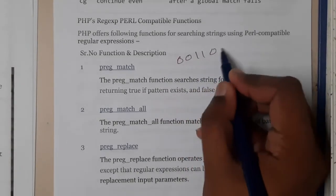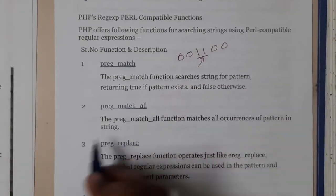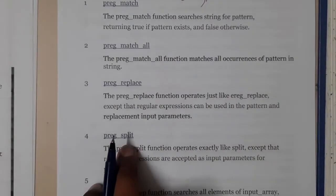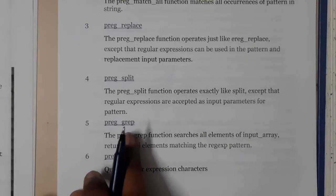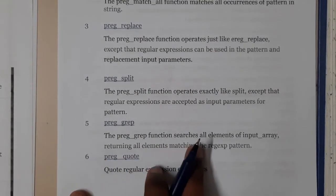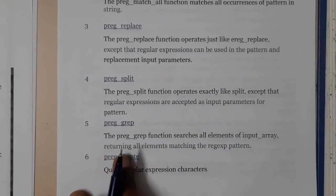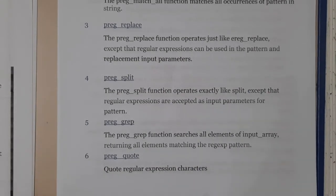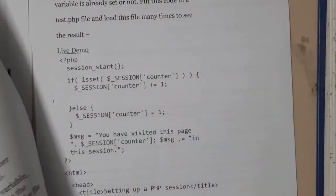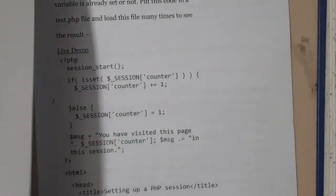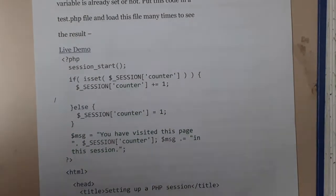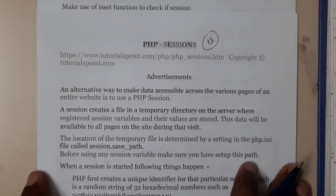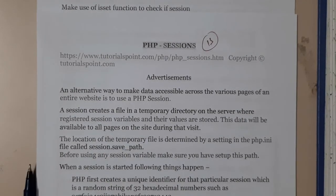For example, searching for '11' in '001100' — it checks for that particular match. 'Match all' means it should match exactly. 'Replace' replaces a particular part. 'Split' divides a string into parts. 'preg_grep' is a function that searches elements of an input array, returning all elements matching the preg_grep expression. In the next lecture I will be continuing with PHP sessions. Thanks for watching.